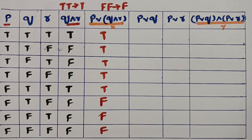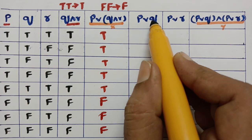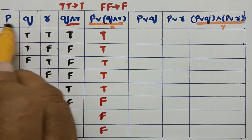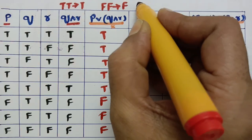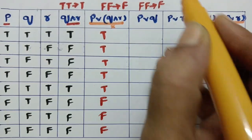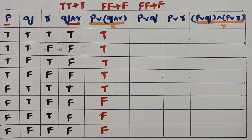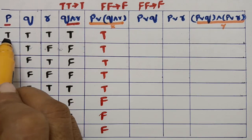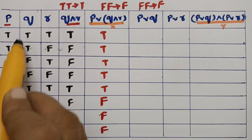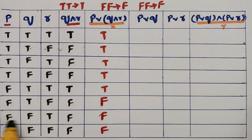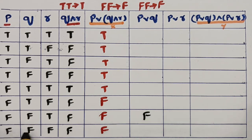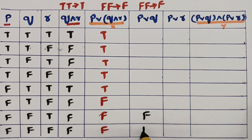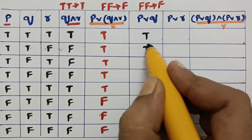Next compute p or q. There is an 'or' again, so the logic is: if both are false, write false; otherwise write true. Comparing p and q, we find two rows with false-false, so those get false. The remaining rows are all true.